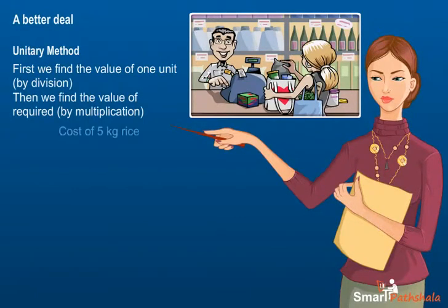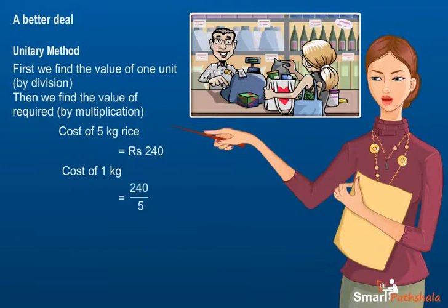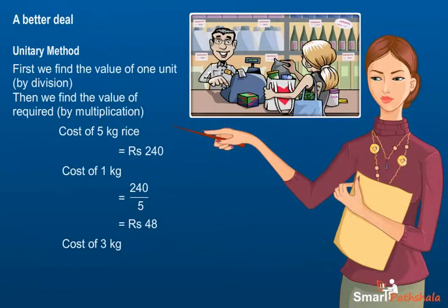Here we have the cost of 5 kg rice as Rs. 240. So cost of 1 kg is Rs. 240 divided by 5, which is equal to Rs. 48. Now cost of 3 kg rice will be equal to 3 multiplied by 48, which is equal to Rs. 144.